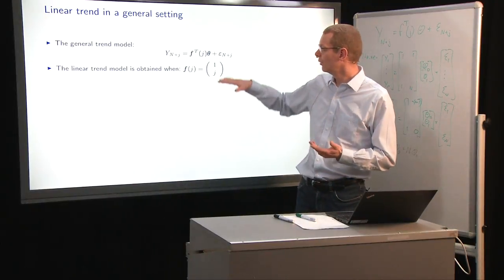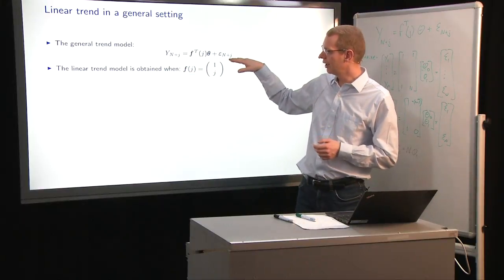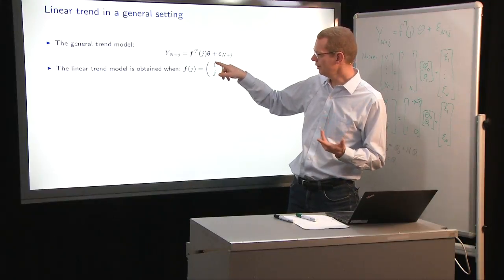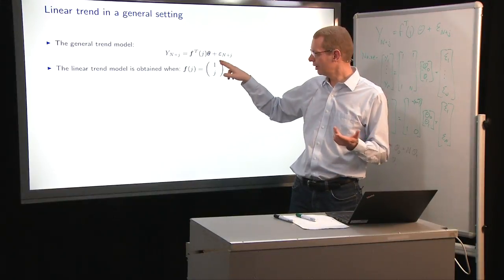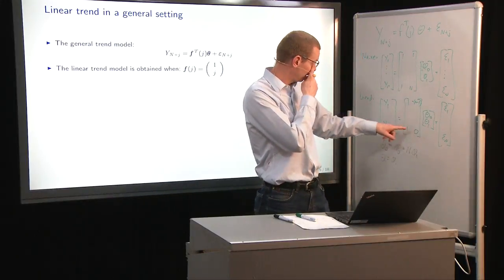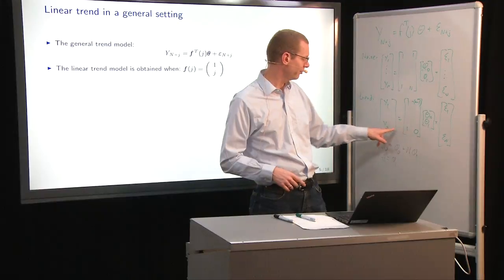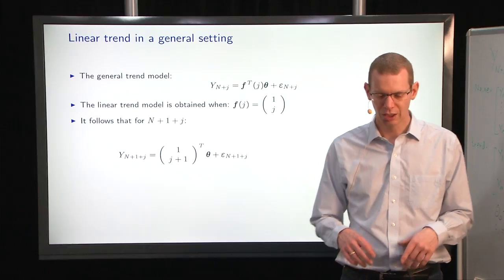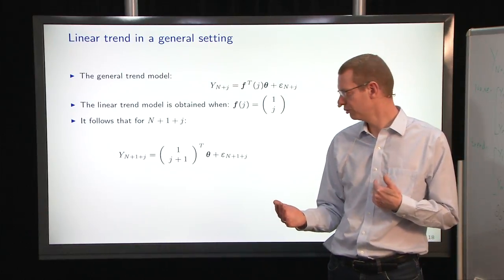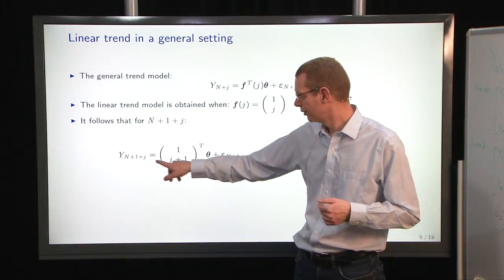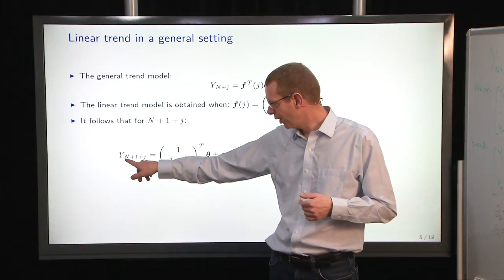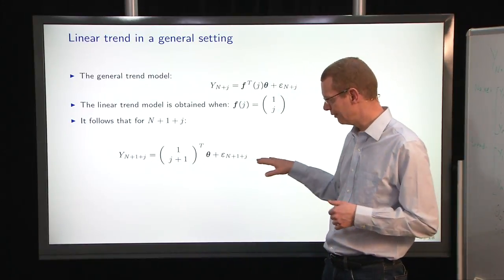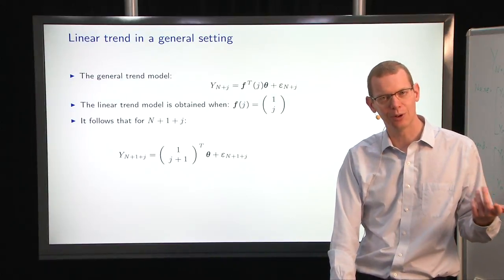In a general setting, we have this expression for the trend model. If we have a linear model, then we have a one here to get the intercept, and then we have j to say how far difference are we in time relative to the current time n. To get one step forward in time, your time step is now y n plus 1 plus j is just to use j plus 1 here, and then everything else is the same except epsilon is also a new epsilon.